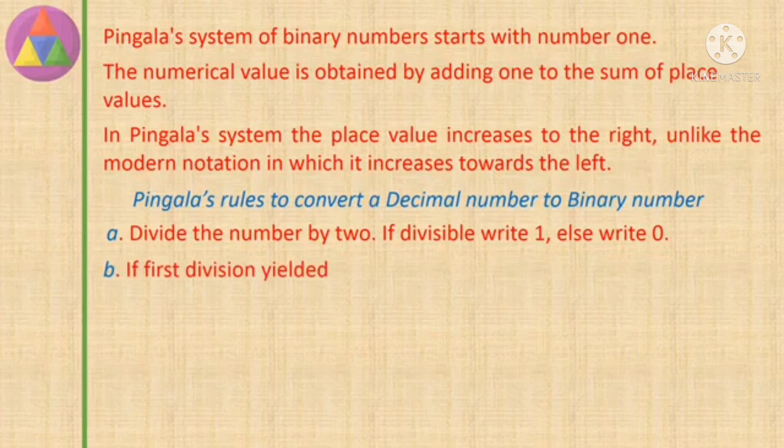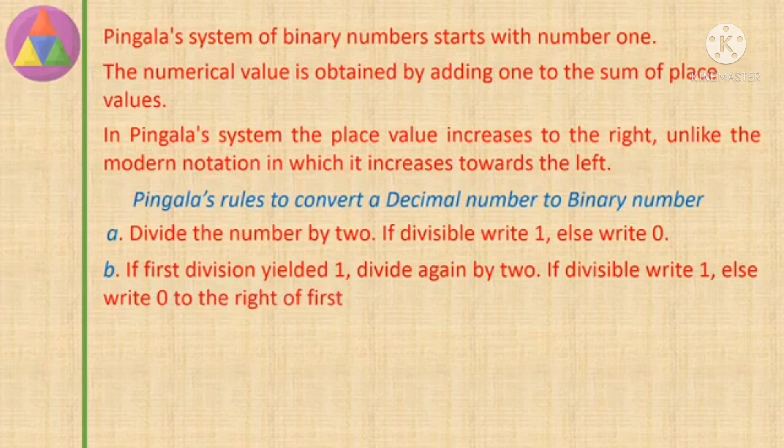B. If first division yielded 1, divide again by 2. If divisible write 1, else write 0 to the right of first 1.